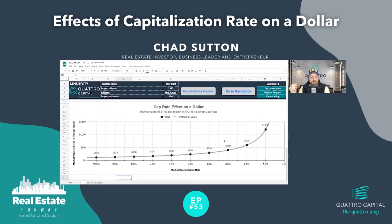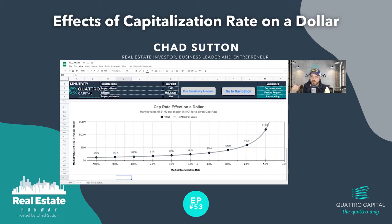At a 10-cap, every dollar is worth about $120 in value. So saving $1 in NOI per month for a year will yield you $120 in value — that's $120 to 1. At a 9-cap, it goes to $133. 8-cap, $150. 7-cap, $171. 6-cap, $200. 5-cap, $240. So by the time we go from a 10 to a 5, we have doubled — $120 to $240 — our valuation impact.